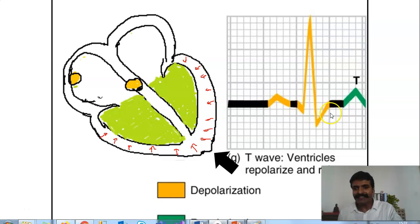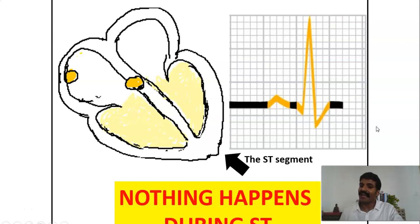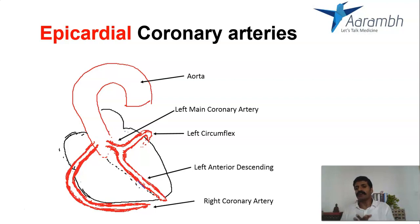Let me reiterate here again — listen carefully. Between the ventricular depolarization, which is the QRS complex, and the ventricular repolarization, which is the T wave, you have a part called the ST segment. The ST segment is isoelectric because during the ST segment there is no electrical activity. Now let us look into how perfusion affects the ECG changes.